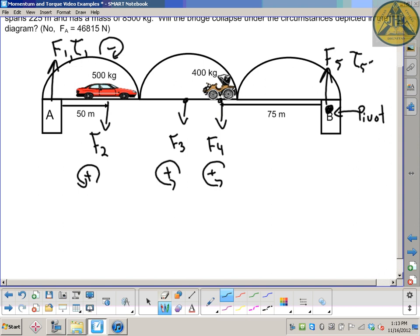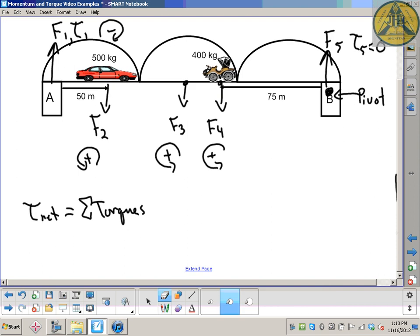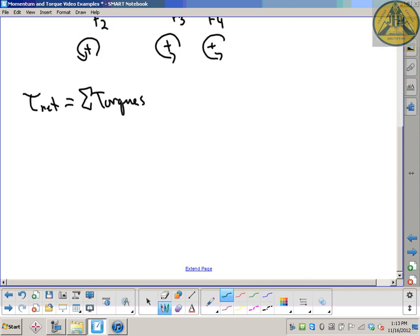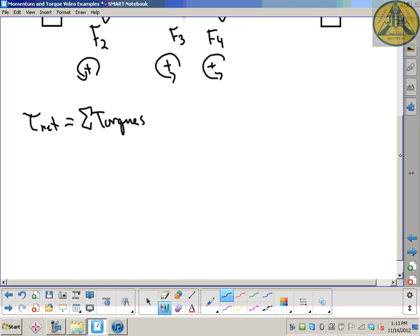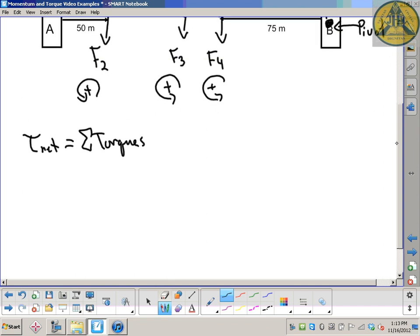We've got torque five at the end, but that's zero. We set up our net torque equation - it's the sum of all the torques that are there. I've got torque from one, two, three, and four, and five is zero.